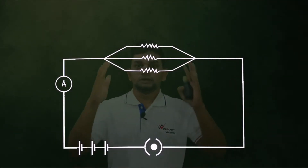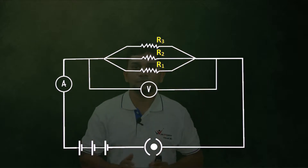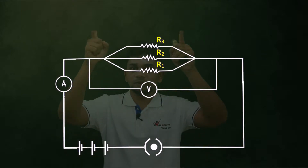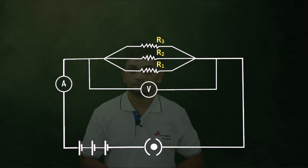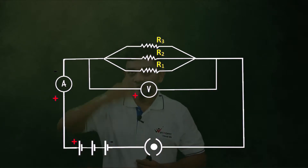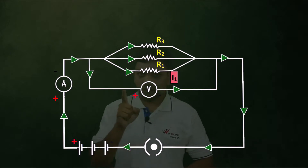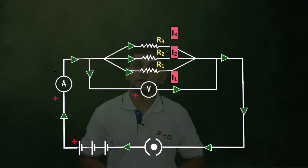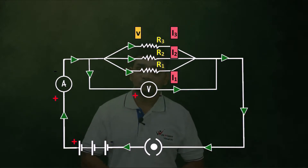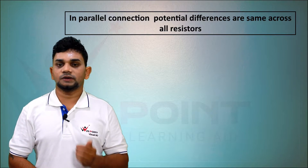Now parallel connection. Here you can see three resistors R1, R2, and R3. The voltmeter is always connected parallel to the resistor, and the ammeter is always inside the circuit in series connection. In parallel connection, the voltage is the same in each resistor, but the current is different. The current through R1 is I1, through R2 is I2, and through R3 is I3. The potential difference is the same — V — across all resistors.